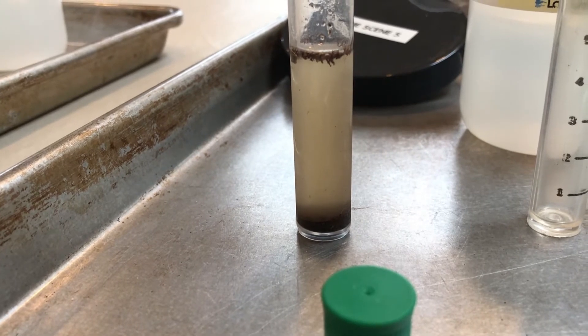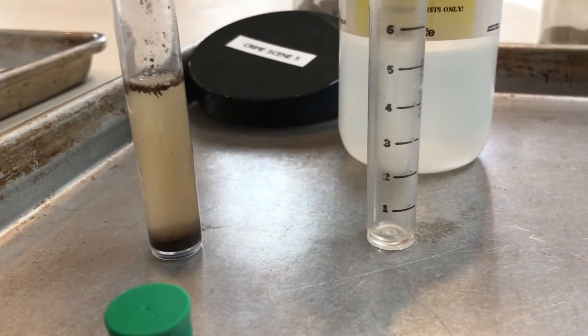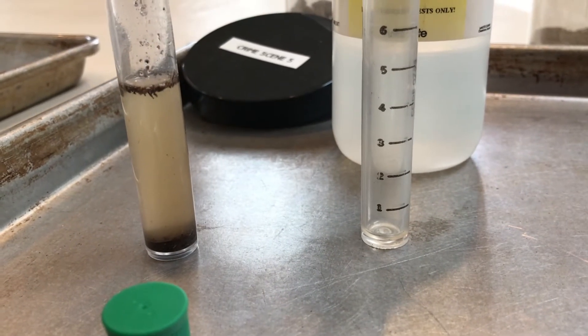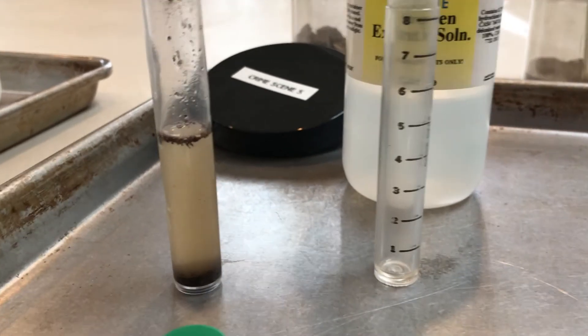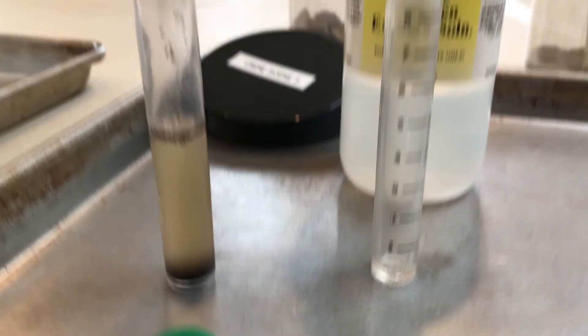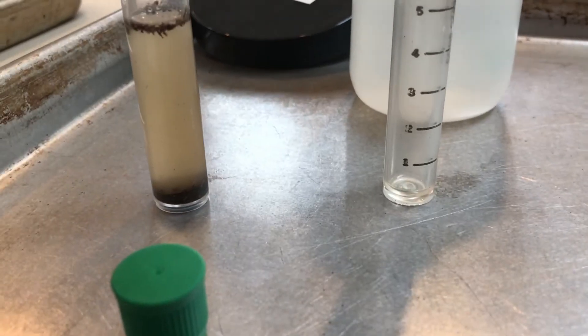Now what we need to do is take that clear liquid and pipette it into a different test tube so we can actually add our nitrogen indicator powder. So this is how you pipette. You want to make sure you take a dropper. You squeeze the dropper so there is no air in it.